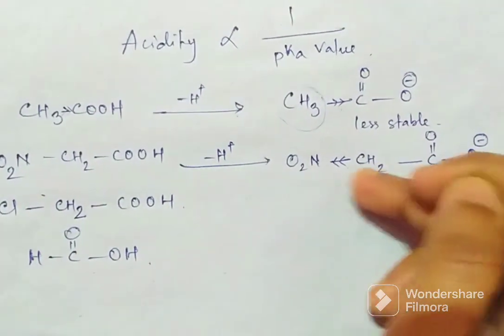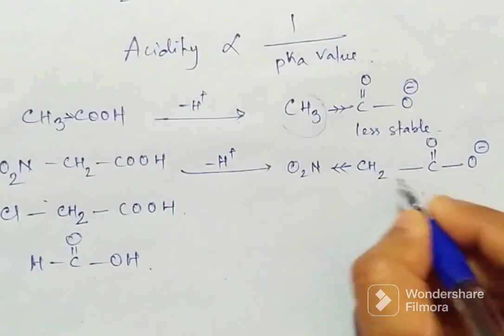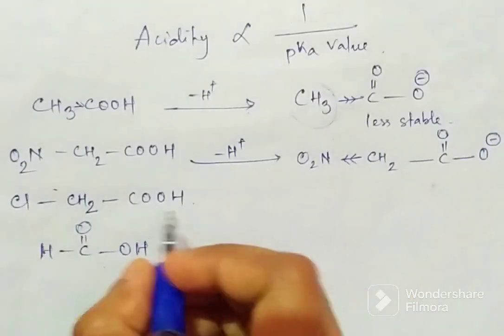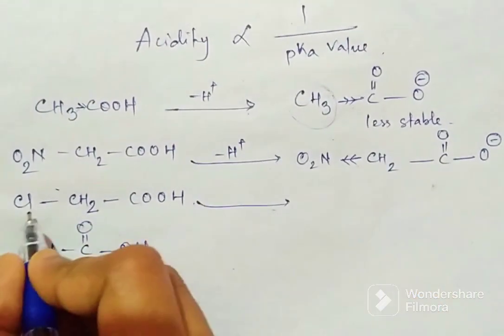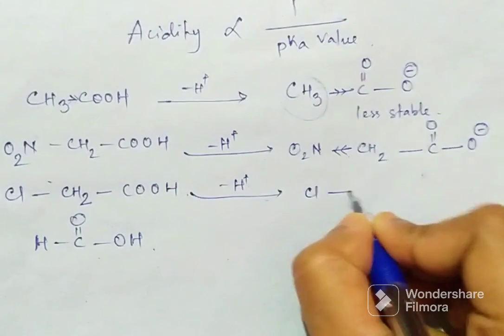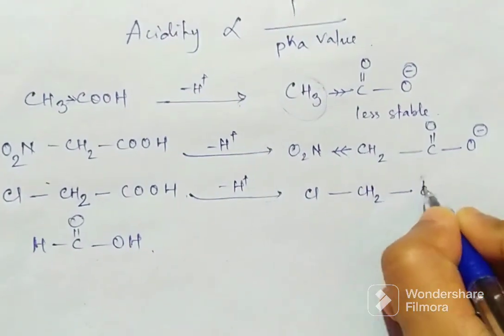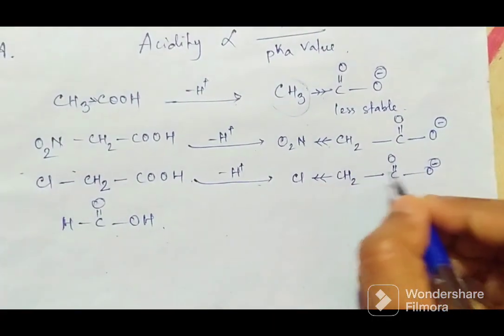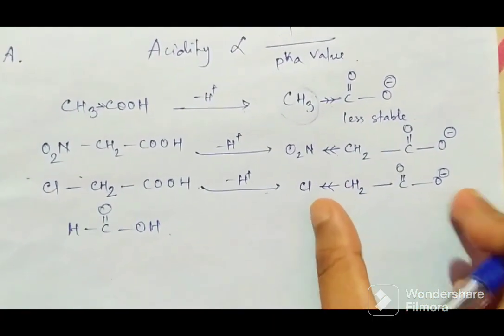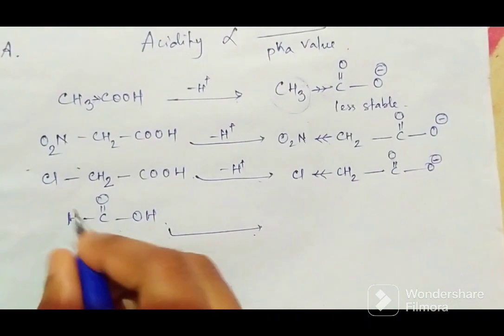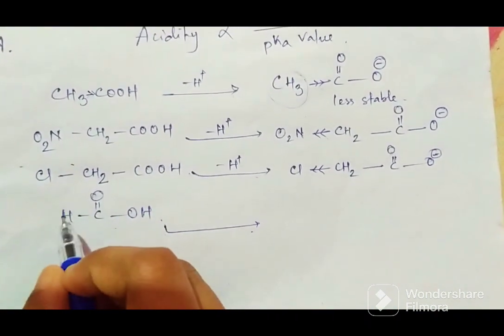Here also it is Cl, so Cl is also an electron withdrawing group, so it will create this way and the negative charge will go this way and the carbanion will be stable. And this is formic acid. Here no electron withdrawing group or donating groups are present. So here one thing, remember: when electron withdrawing groups are present, it makes this carbanion more stable.